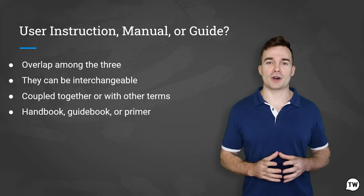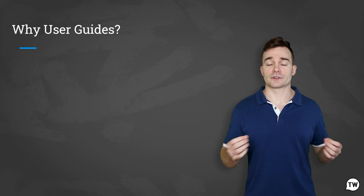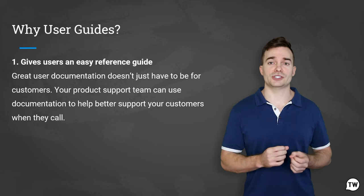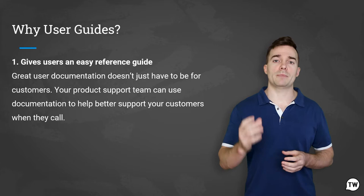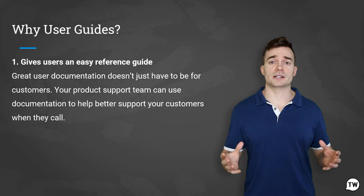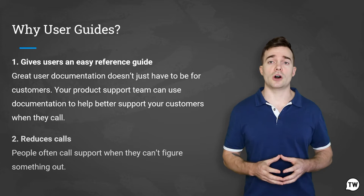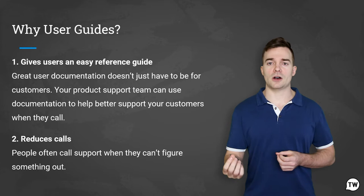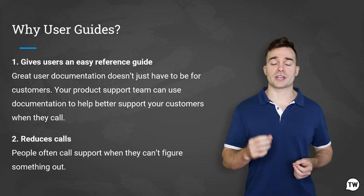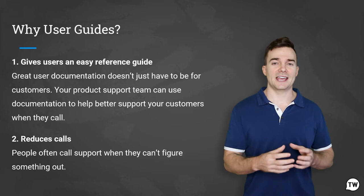Why is there a need to have a user guide in the first place? There are two reasons. First, it gives users an easy reference guide. Great user documentation doesn't just have to be for customers — your product support team can use documentation to help better support your customers when they call. When you include essential pieces such as a table of contents or index, they can quickly find the information they need. It also reduces calls. More than 70% of people prefer to use a company's website for help rather than use a phone or email and wait for a response.